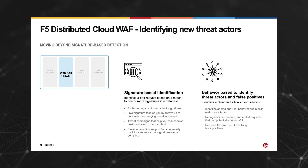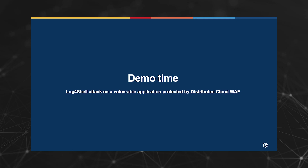The F5 distributed cloud WAF shares the same engine with the industry-leading BIG-IP Advanced WAF and NGINX App Protect WAF, enabling the highest level of protection available on the market. As such, it is actually protecting against the Log4Shell attack out of the box, with no additional configuration needed.